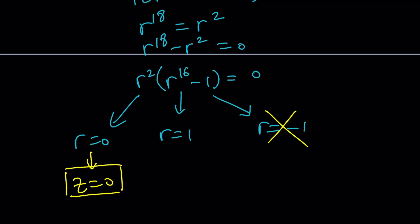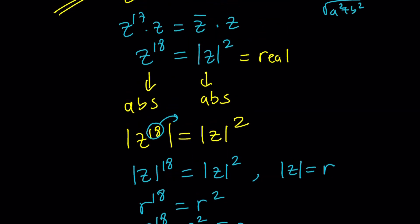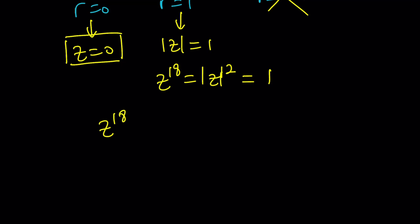R equals 1 means what? This means absolute value of Z is equal to 1. Let's go back to our equation. Z to the 18th is absolute value of Z squared. But we know now that the absolute value of Z is 1. So this is going to be 1. Great. Now, this gives us something super-duper nice. Z to the 18th equals 1, which means we're going to be dealing with the 18th roots of unity. And there are 18 of them.